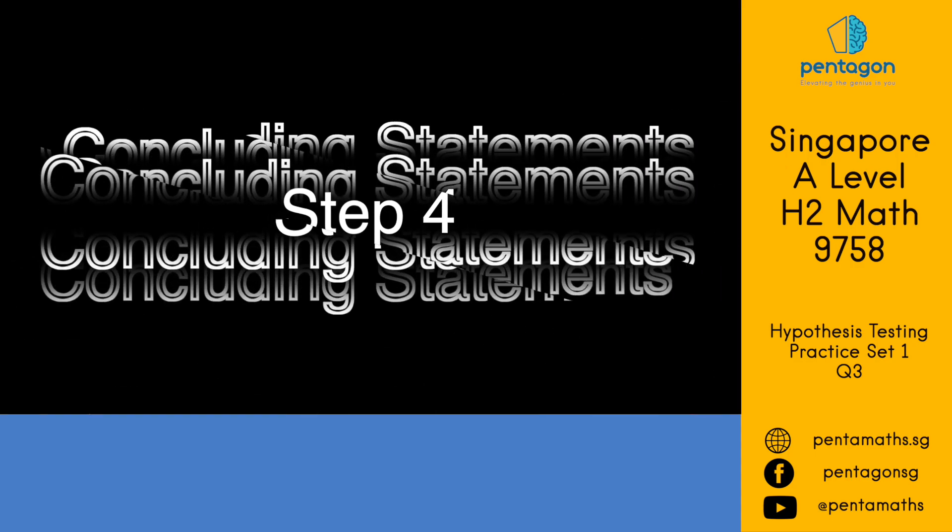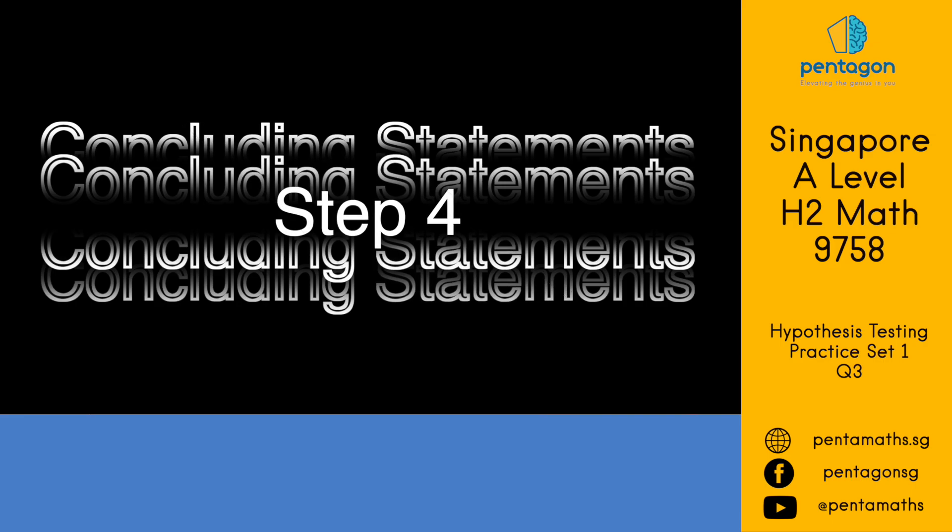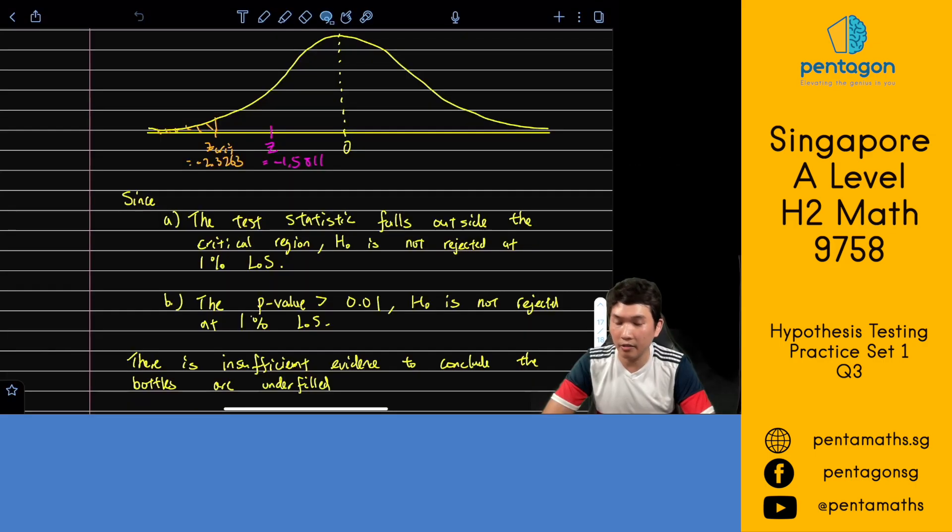Now let's take a look at how we can conclude this question. So in conclusion, depending on whether you use step 3a or 3b, you have to write down these statements. And of course, remember to answer the context of the question with a second sentence. And this is how we do question 3. Stay tuned for question 4, because we're going to do question 3 all over again. But this time we're going to pretend we don't know the population variance. We'll take a look with a side-by-side comparison. What has changed? What are the things that we need to look out for? So I'll see you in the next one.